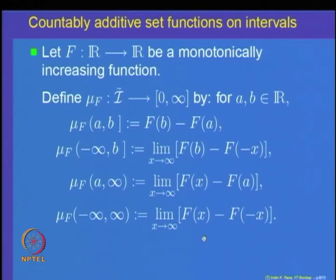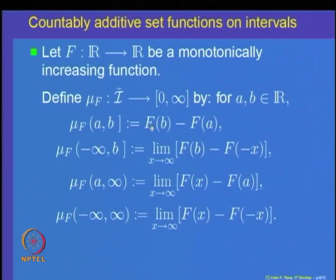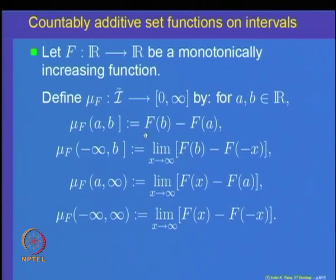Note that this is a generalization of the length function. If f is the identity function — f(x) equals x, which is monotonically increasing — then mu_f of (a,b] is simply b minus a, the length function. One can write a proof that mu_f is countably additive on the same lines as the proof that the length function is countably additive.